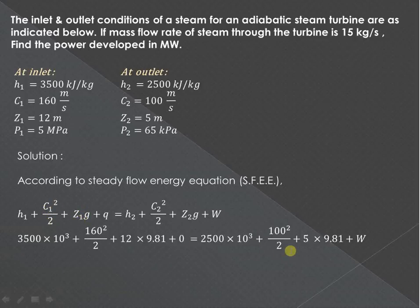So 3500 into 10 raised to 3, substitute the value of velocity also. Then datum is 12, g is 9.81, q is 0. Similarly, substitute values for h2, C2, Z2, and g.